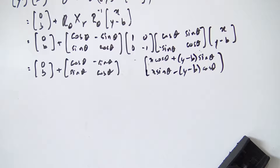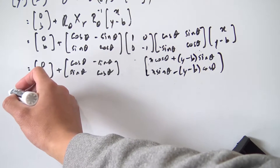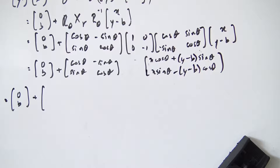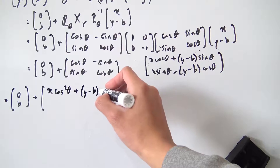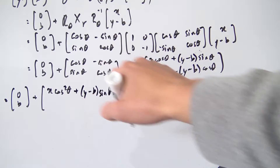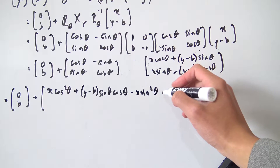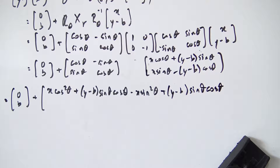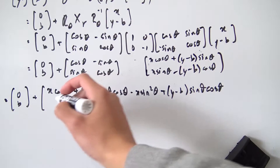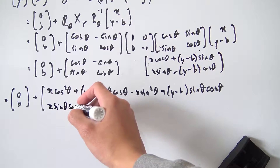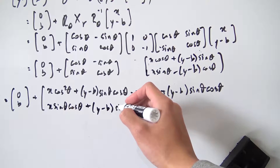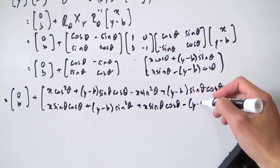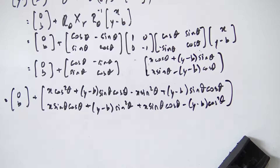Now we multiply in the R(θ) matrix, which will be a bit of a mess. For the top entry: cos theta times (x cos theta + (y-b) sin theta) minus sin theta times (x sin theta - (y-b) cos theta), giving x cos²theta + (y-b) sin theta cos theta minus x sin²theta + (y-b) sin theta cos theta. For the bottom entry: sin theta times the top part plus cos theta times the bottom part, giving x sin theta cos theta + (y-b) sin²theta + x sin theta cos theta minus (y-b) cos²theta.